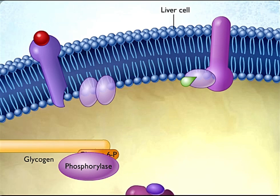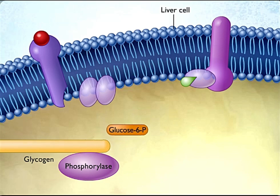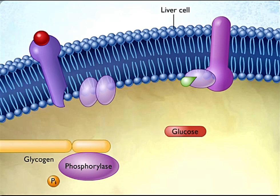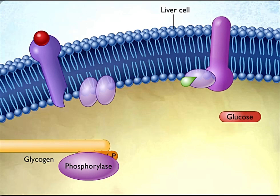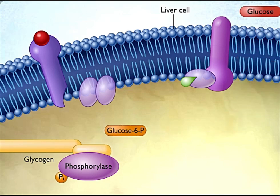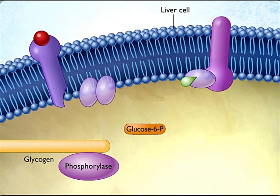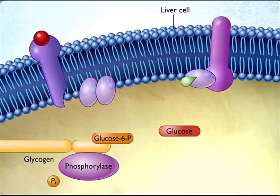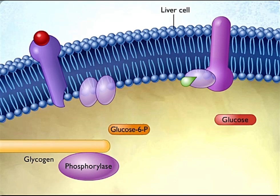The glucose 6-phosphate is then converted to glucose. Through this multi-step mechanism, epinephrine causes the liver to secrete glucose into the blood during the fight-or-flight reaction.